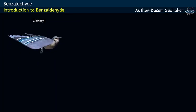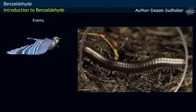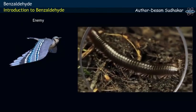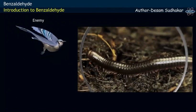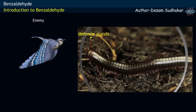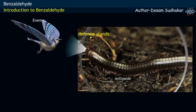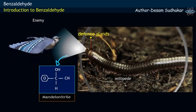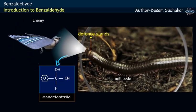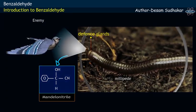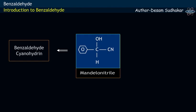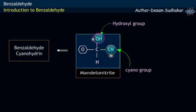When a bird acting as an enemy preys on the millipede for food, the millipede becomes attentive and activates its defense glands. These glands release a substance called mandelonitrile, having the structure shown. This compound is also called a cyanohydrin as it contains both a cyano group and a hydroxyl group.